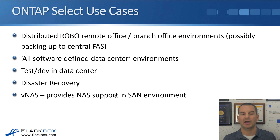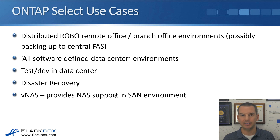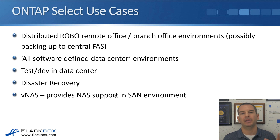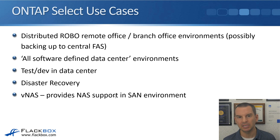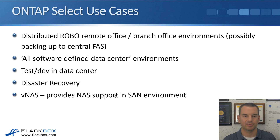Another use case for ONTAP Select is VNAS — ONTAP Select running as a virtual machine to provide NAS support in a SAN environment. For example, if you have hyper-converged infrastructure with compute and SAN storage, and you want NAS support as well, you can run ONTAP Select as a virtual machine in your HCI environment to add NAS support.